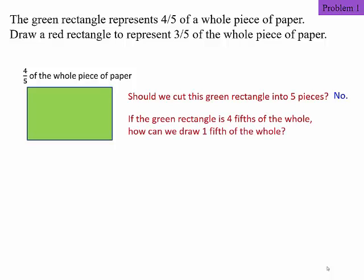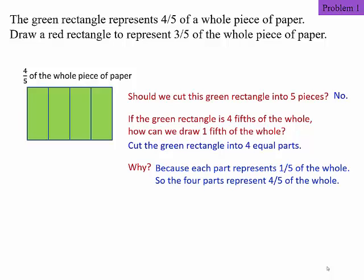If the green rectangle is four-fifths of the whole, can we actually draw one-fifth of the whole? Yes, right? How? By cutting the green rectangle into four equal parts. So why? Because each part actually represents one-fifth of the whole. So the four parts collectively will represent four-fifths of the whole.